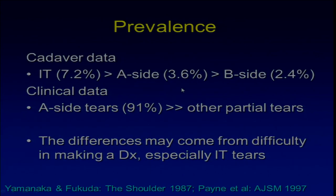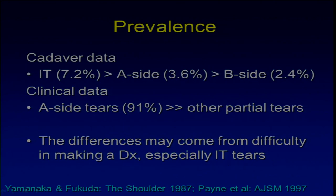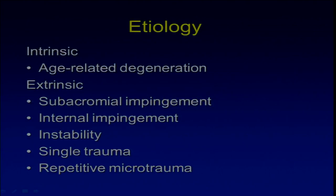What is the prevalence of a PASTA lesion? According to cadaveric studies, inter-tendinous tear is the most common type of partial thickness tear — twice as common as articular side tear and three times more common than bursal side tear. However, clinical data shows that the articular side tear is by far the most common type clinically, probably due to the difficulty in diagnosing inter-tendinous tears.